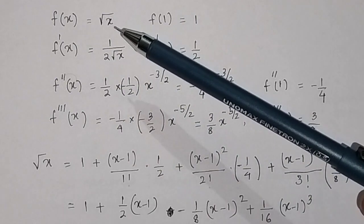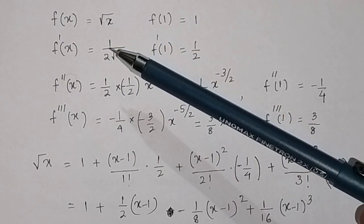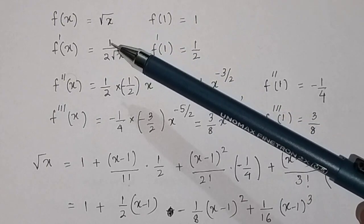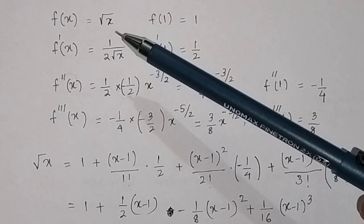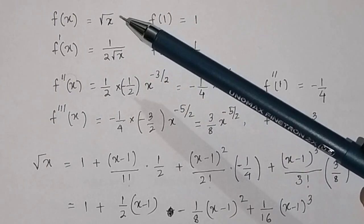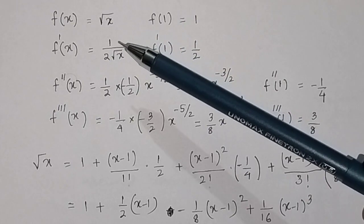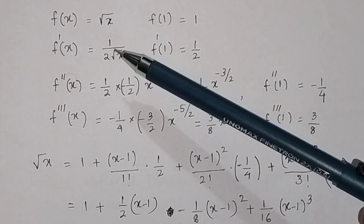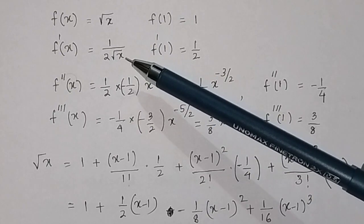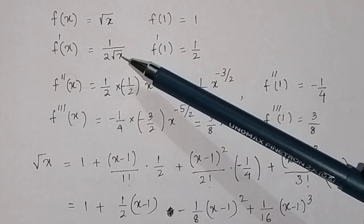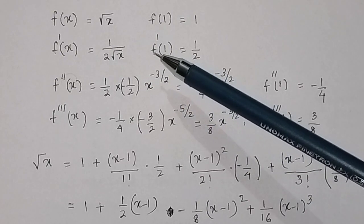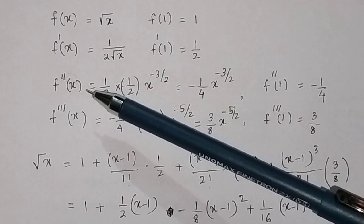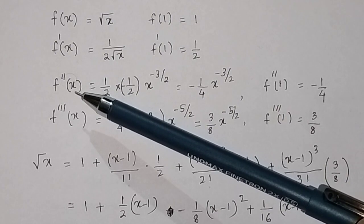The first derivative of √x: writing it as x^(1/2), the derivative is (1/2)x^(1/2 − 1) = (1/2)x^(−1/2) = 1/(2√x). At x = 1, f'(1) = 1/2.